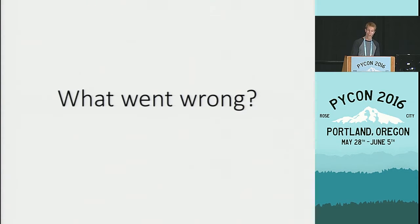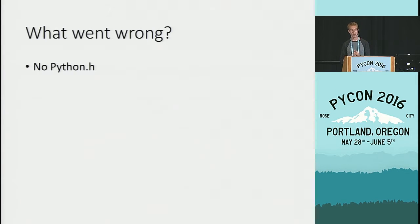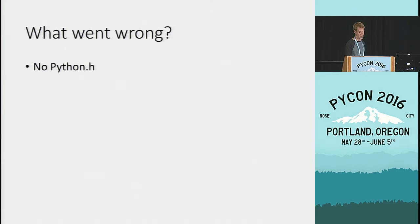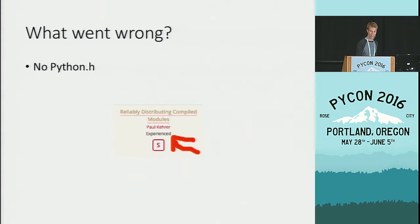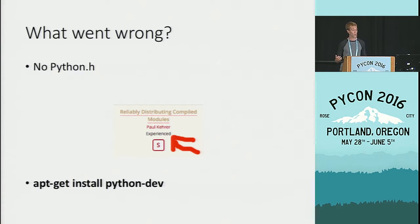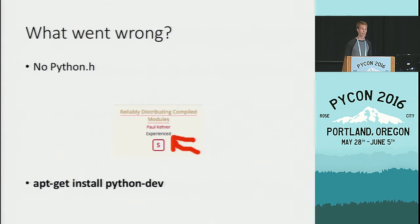What went wrong? As you saw in the snipped area, Python.h was not there. Python.h is the primary include header for Python itself. We are experienced people, so we know how to solve this — we'll install the Python development headers, which we naturally know are named python-dev or python-devel on Red Hat-derived distributions.